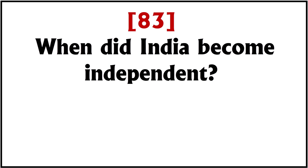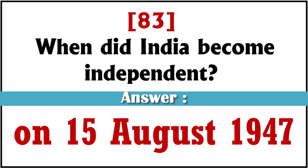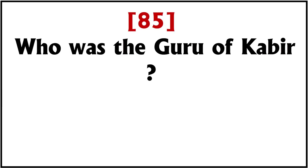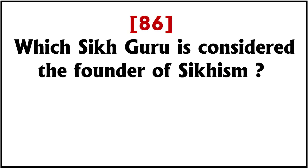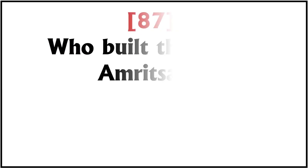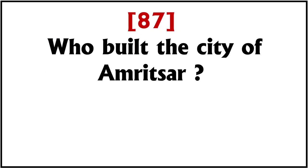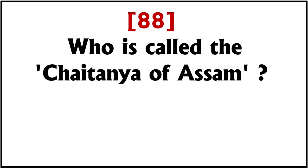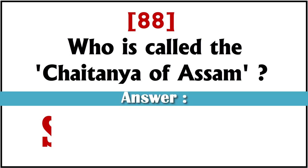When did India become independent? On 15th August 1947. Who was the father of the Bhakti movement in Punjab? Guru Nanak. Who was the Guru of Kabir? Ramanand. Which Sikh Guru is considered the founder of Sikhism? Guru Nanak. Who built the city of Amritsar? Guru Ramdas. Who is called the Chaitanya of Assam? Shankar Dev.